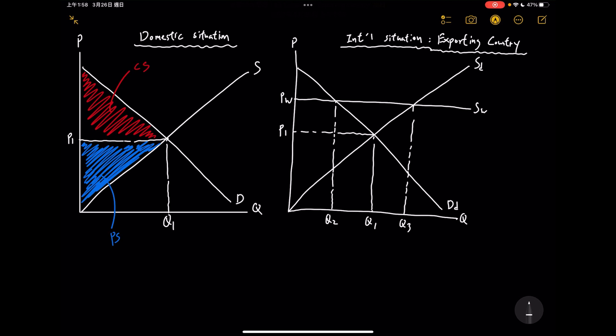As you can see from the diagram on the left, that is basically telling you the allocation of resources when it is in the domestic situation only, which means there is no trade with other countries. You can see how big the CS and PS are in this situation.